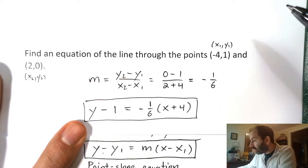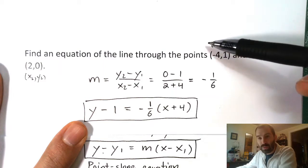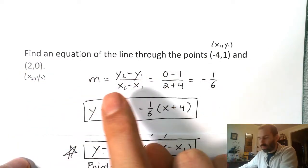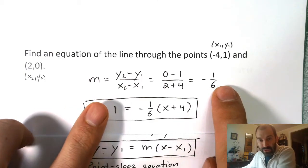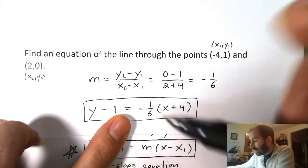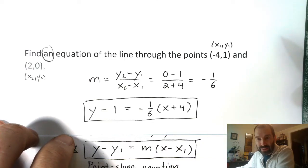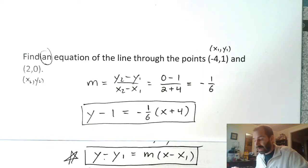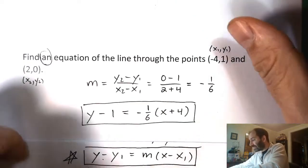You might wonder: what if we had chosen this to be our (x1, y1) and this to be our (x2, y2)? There's nothing particular about the order. If I flip them, I'll get different numbers here — I'll get the same value for the slope, but different numbers. However, it will in fact describe the same line. That's why I wrote 'find any equation' — there's more than one equation that describes a single line.